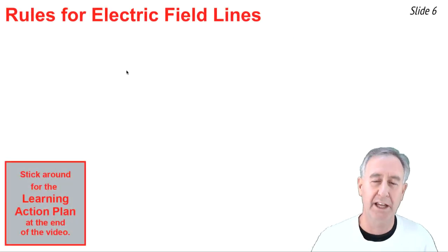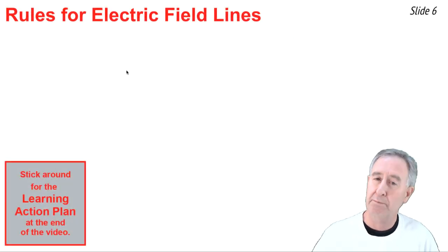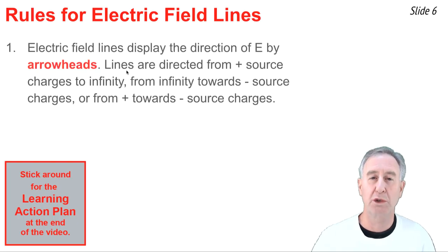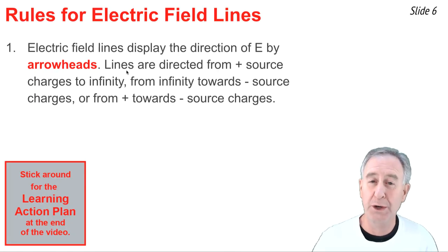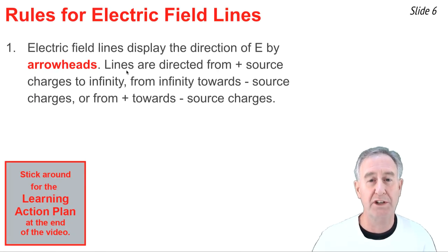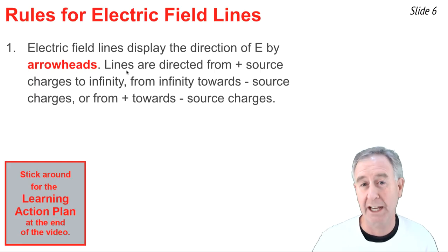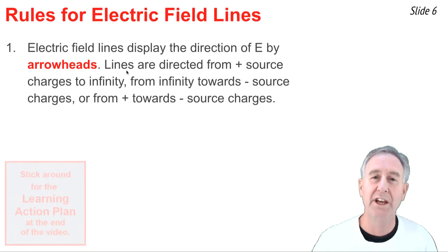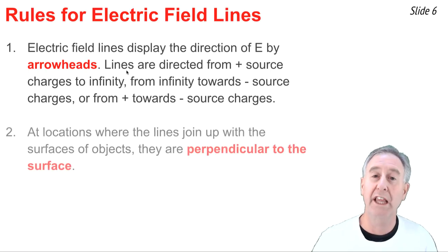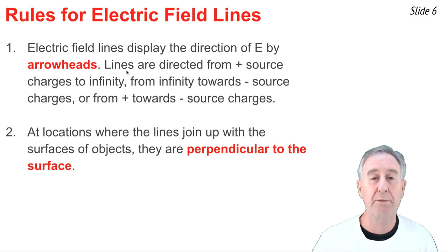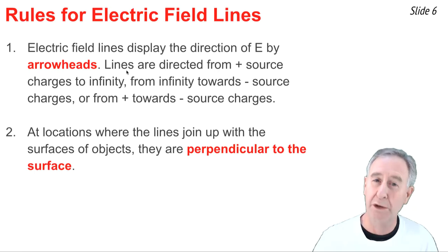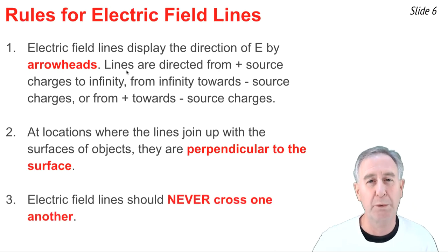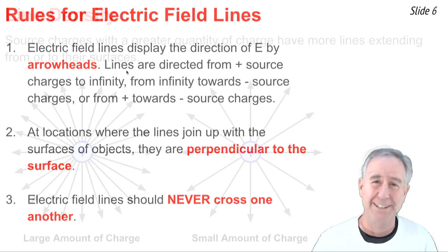When drawing electric field lines, it's important to follow a few simple rules. The first has to do with placing an arrowhead on the line to indicate the direction. These directions should always go from positive source charges towards infinity, from infinity towards negative source charges, or from a positive source charge towards a negative source charge. The second rule is that when lines join up with the surfaces of source charges, make sure those lines are drawn perpendicular to the surface at that join-up location. The third rule is: never cross your lines on electric field line diagrams.